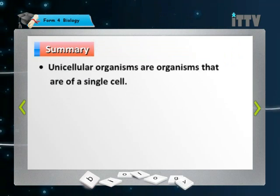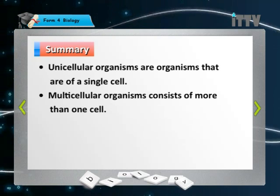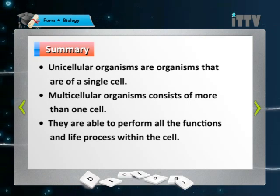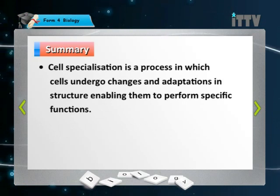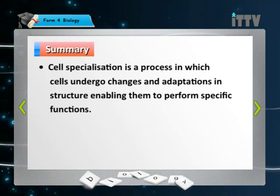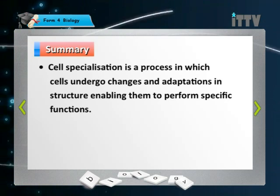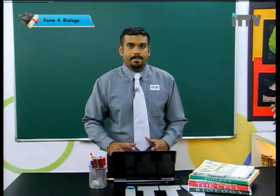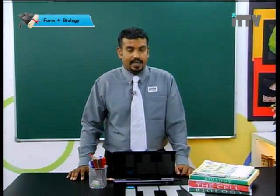In a nutshell: unicellular organisms consist of single cells; multicellular organisms consist of more than one cell and are able to perform all living processes. Cell specialization is a process in which cells undergo changes and adaptations in structure, enabling them to perform specific functions. We have come to the end of this segment — let's carry out our self-assessment.